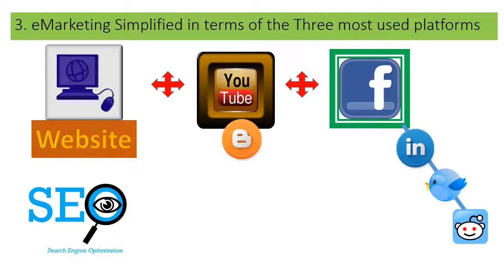If you want to simplify e-marketing in terms of the three most used platforms, it is basically your website underpinned by your search engine optimization techniques. The other element is YouTube — people nowadays access YouTube similarly to how they access Google. People want data from videos. You also have your blog, but many people now make videos of their blog content, so the blog per se may not have as much standalone value because you will find many videos where people virtually read their blogs.